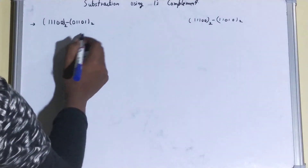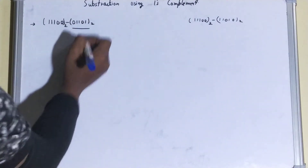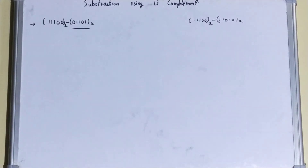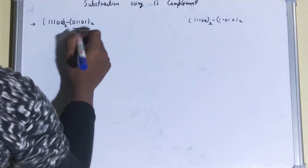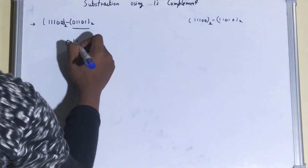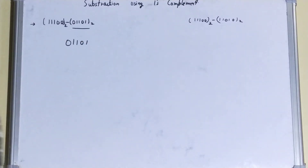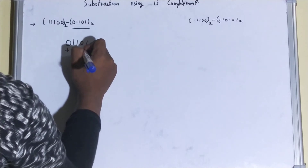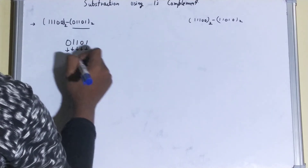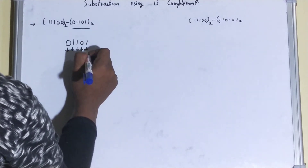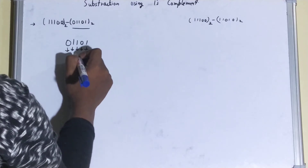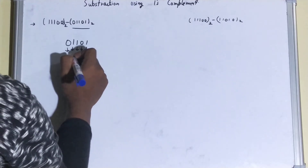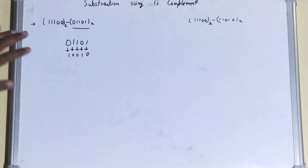Let's start with the first question. Whatever you are subtracting, you have to find the 1's complement. So our number is 1 1 0 1. To find the 1's complement, you just invert the number — if there is a 1, make it 0, and if there is a 0, make it 1.